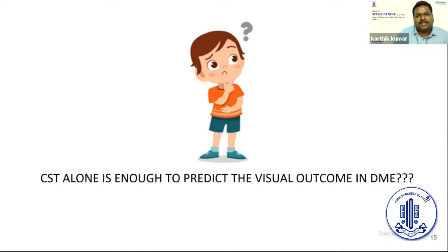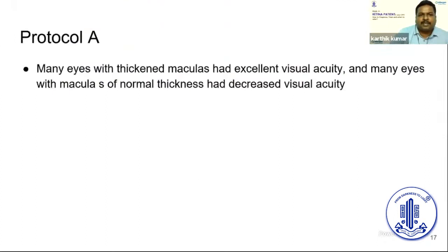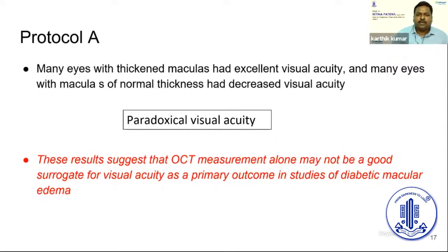The question is whether macular or central subfield thickness alone is enough to predict visual acuity in DME. DRCR.net Protocol A, which compared OCT-measured retinal thickness and visual acuity in eyes with macular edema before and after laser treatment, found only a modest correlation between BCVA and central point thickness. Many eyes with thickened macula had good visual acuity and many with normal thickness had decreased acuity — termed paradoxical visual acuity — suggesting that positional measurement alone may not be a good surrogate marker.